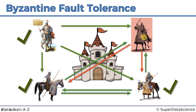Now can they reach consensus? Each loyal general received one red arrow and two green arrows, so they decide to attack. We don't care what the traitor decided because the majority consensus is already reached. Based on that algorithm, more than half of them are going to attack, so they will take the castle and win.